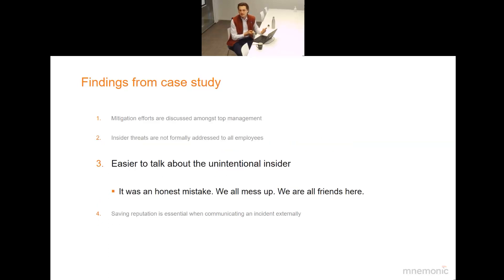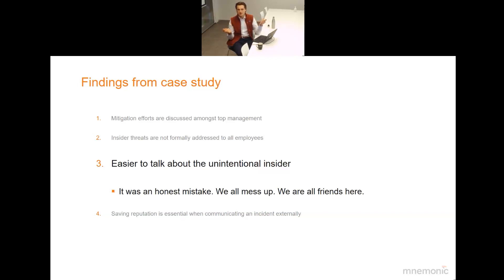Third finding: C-level executives find it easier to talk about the unintentional insider than the intentional insider. The unintentional insider is the presenter at a conference, the guy at a party, the one who clicks a link they shouldn't. When discussing it, executives can hide behind statements like 'it was an honest mistake — we all mess up — but we're all friends here and it's human to make mistakes.' That framing makes it a more comfortable conversation.